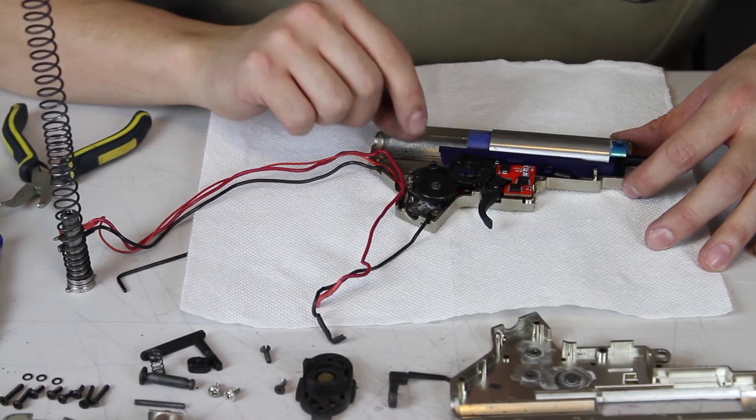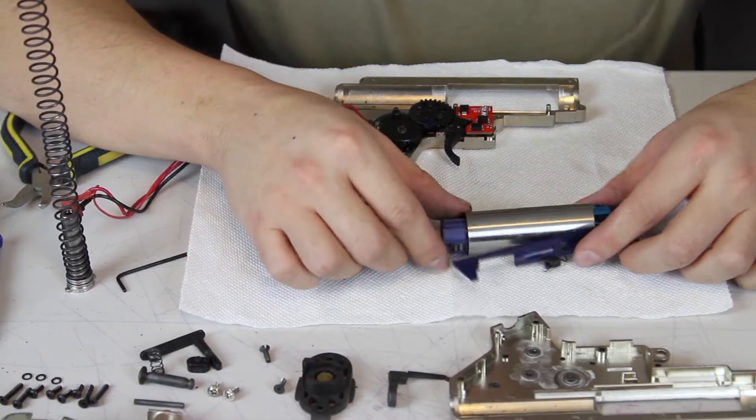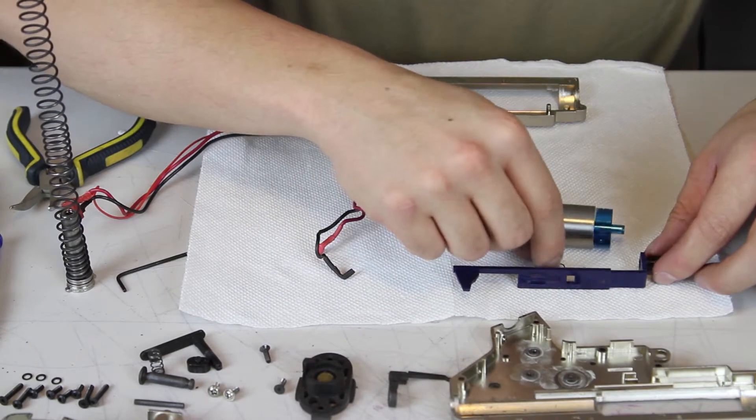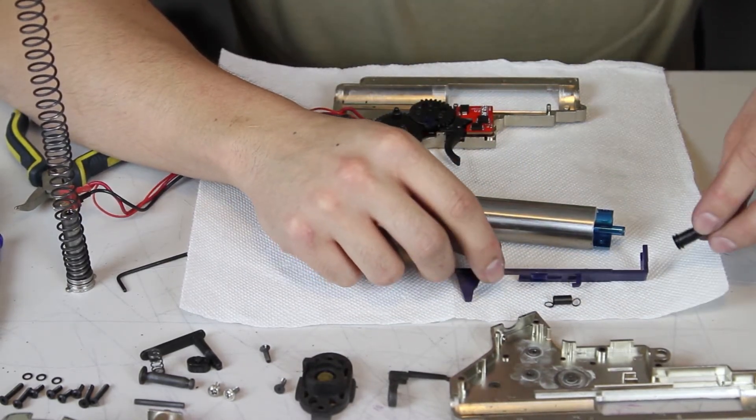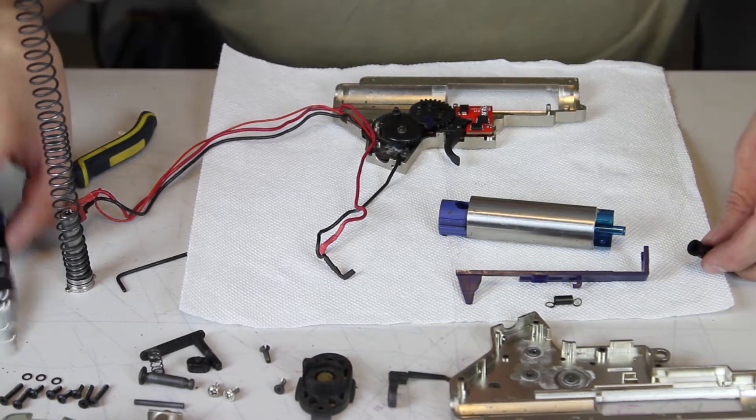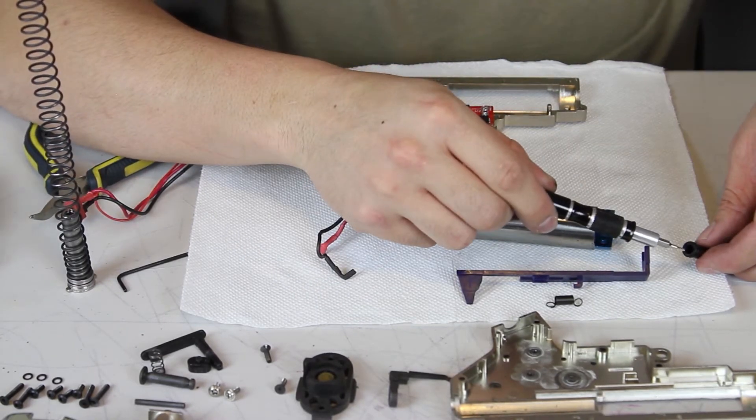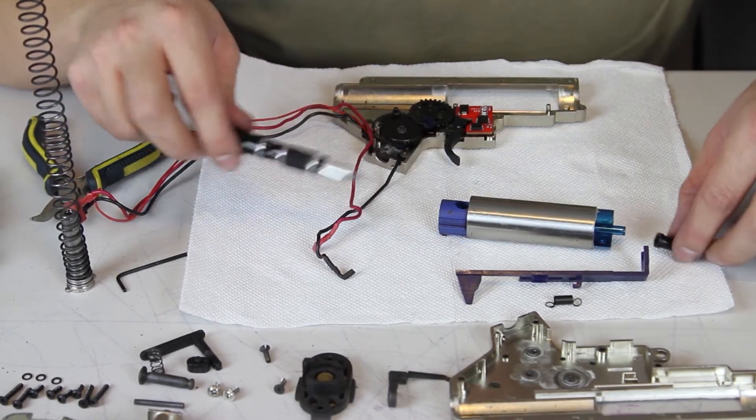Once that spring is released, the whole cylinder portion can come out. Breaking it down, you have your tappet plate, which moves the air nozzle back and forth with the gears, and feeds your BBs from your magazines. The air nozzle has a little o-ring inside the lip, which seals around your cylinder head.